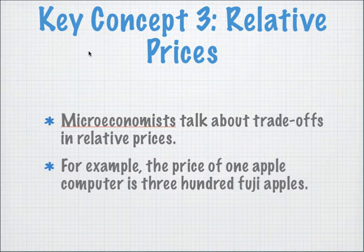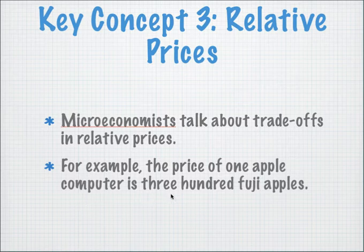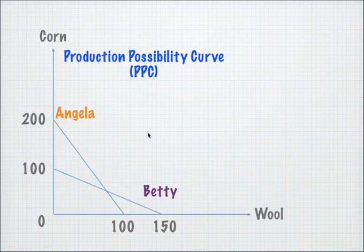The third concept is relative prices. Microeconomists talk about trade-offs in terms of relative prices. For example, the price of one Apple computer could be 300 Fuji apples. We are not so much concerned about the actual absolute price of the good, but rather how much we are sacrificing in terms of another good when we produce something. Even though we can convert all this into a dollar value to compare, that is still thinking in terms of relative prices, not absolute prices.